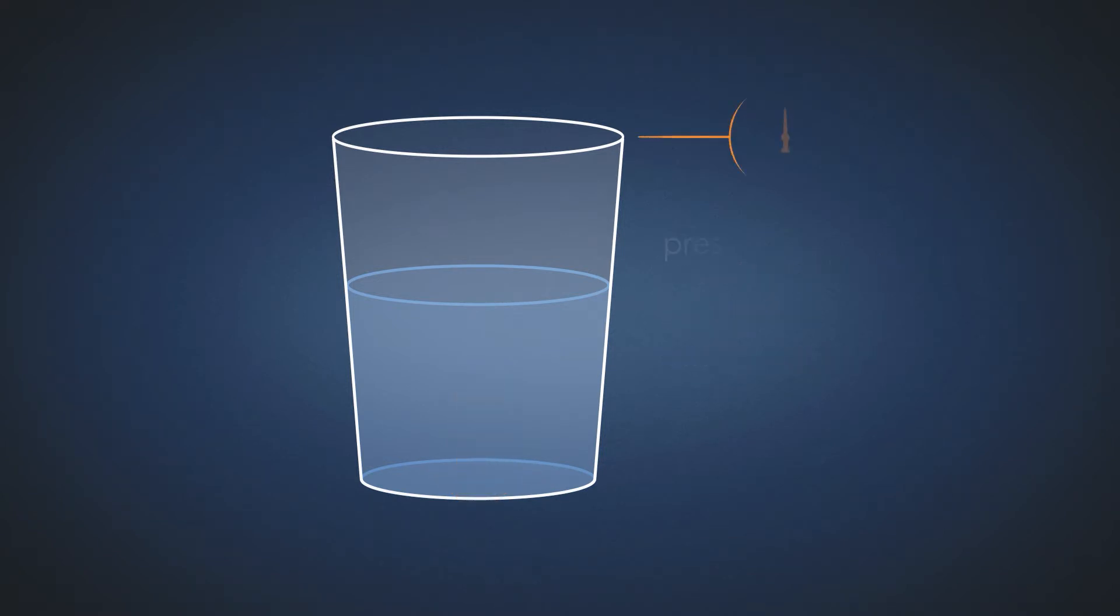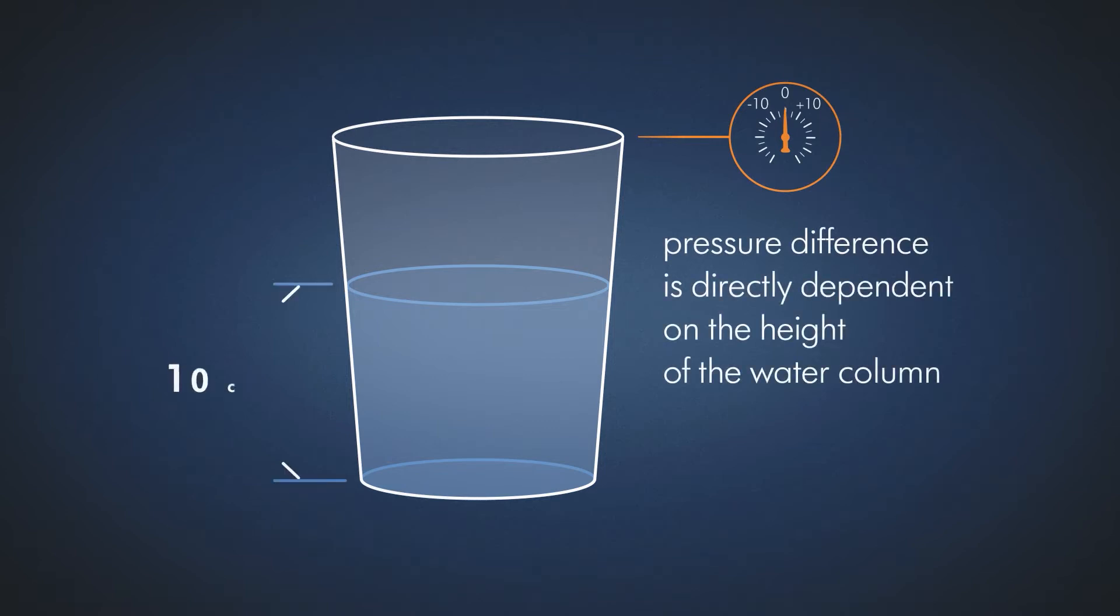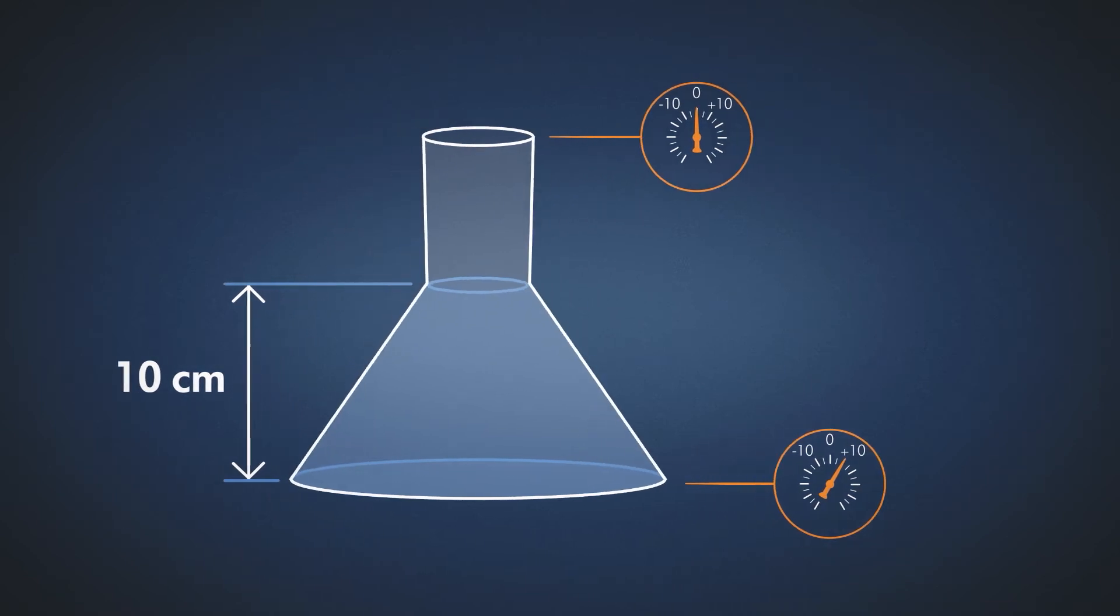This pressure difference is directly dependent on the height of the water column in the glass. The shape of the glass has no influence on the pressure.